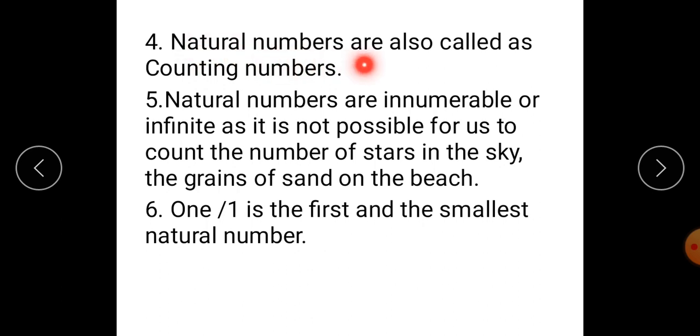Natural numbers are also called as counting numbers because we always use these numbers for counting the things. Natural numbers are innumerable or infinite or uncountable as it is not possible for us to count the number of stars in the sky, the grains of sand on the beach. Therefore, 1 is the first and the smallest natural number.